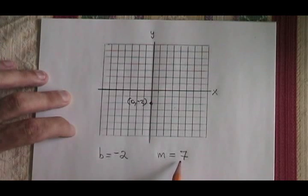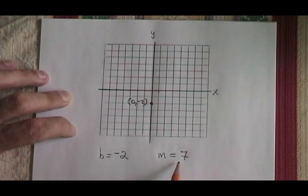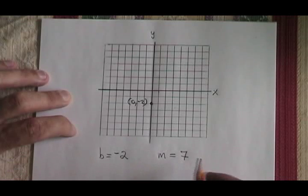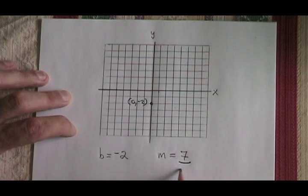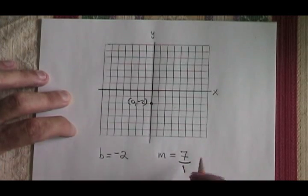Well, all I have to do is convert that to a fraction. So I have to know that any whole number, if you just place it over a 1, can be expressed as a fraction in that way. My rise is therefore 7, and my run is 1.